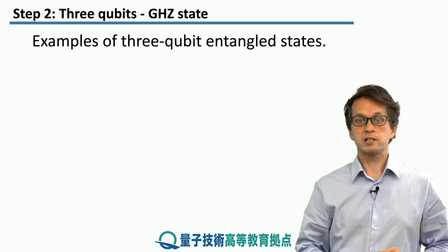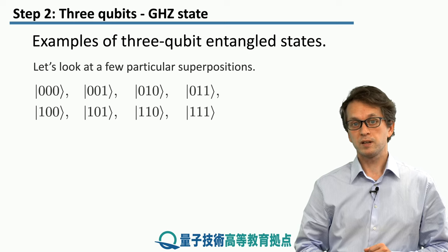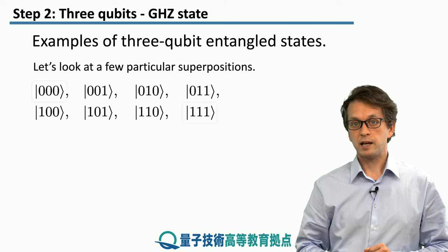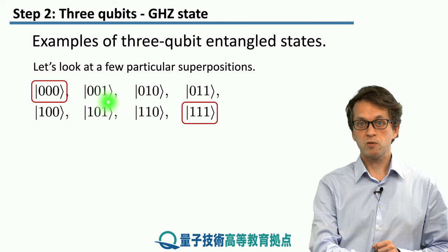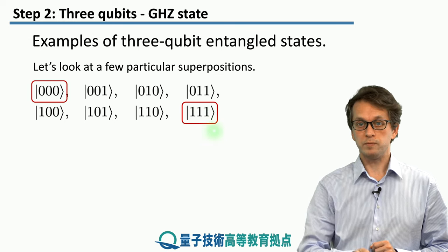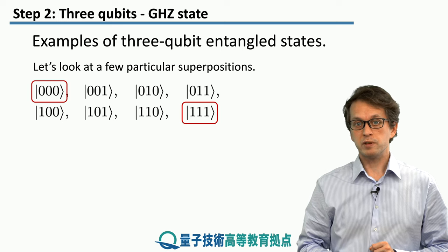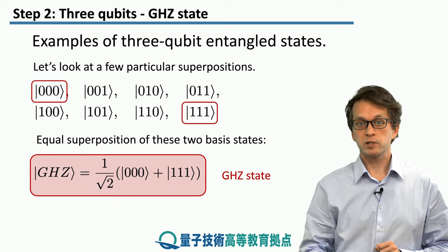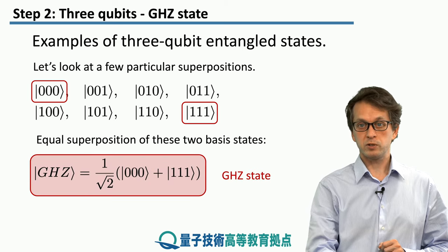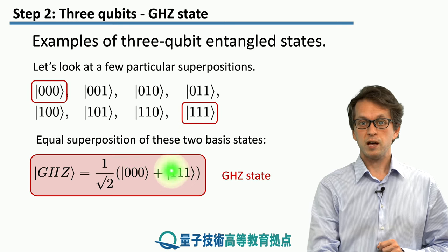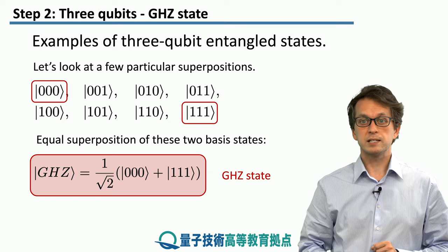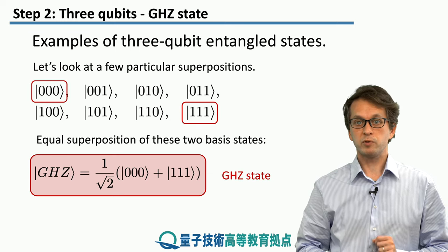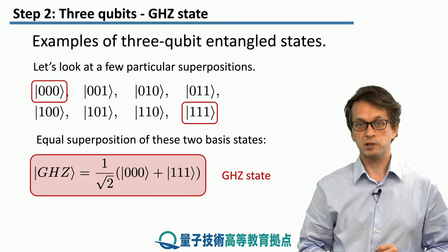Let's consider some examples of entangled states. Let's look at all of our possible eight basis states and take a very simple superposition of just the terms 000 and 111. To keep things simple, we will consider this to be an equal superposition — so we have an equal chance to be found in 000 and 111. This state is known as the GHZ state and plays a very important role in quantum communication, as we will see shortly.